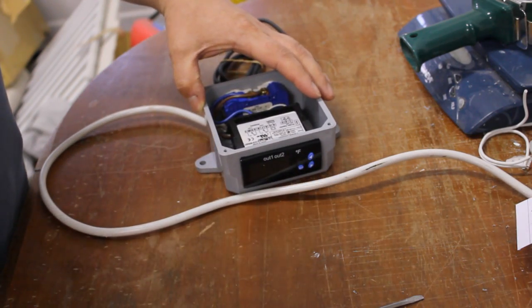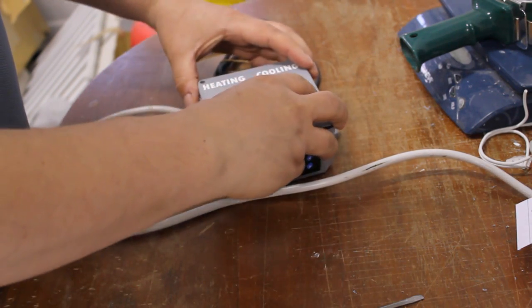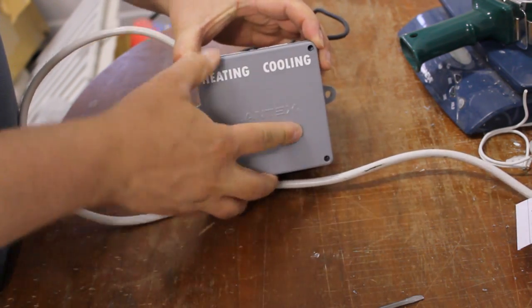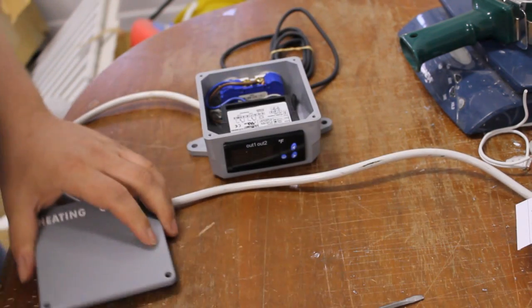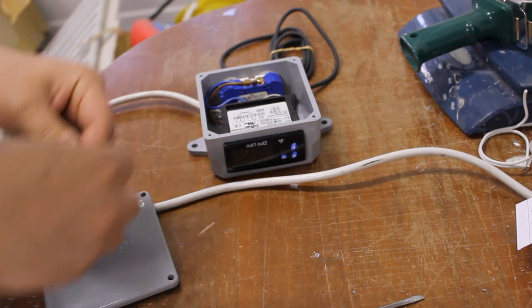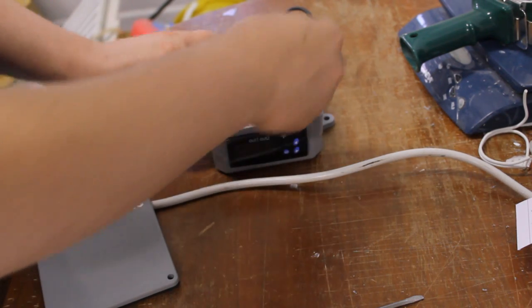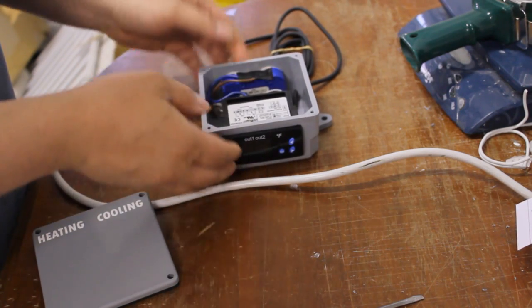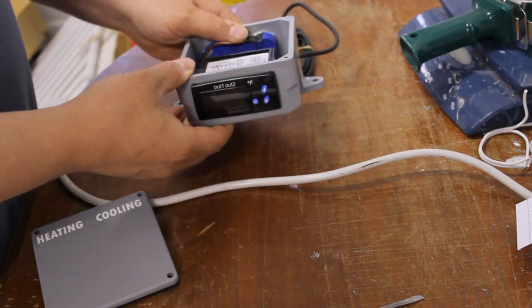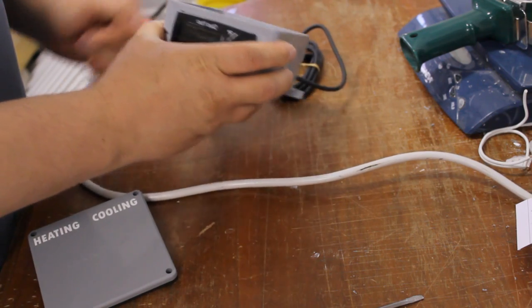And I made up a nice cover here with labels for which one is heating and which one is cooling. And while I'm testing everything and making sure it's working I'm just going to put a piece of electrical tape over those terminals so that now this is relatively safe to handle without the lid on.